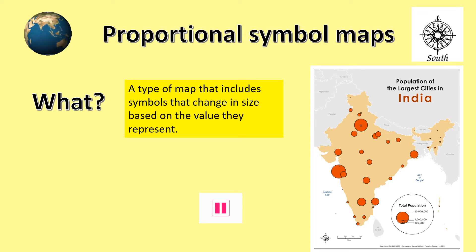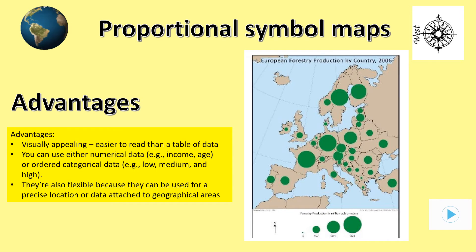An examiner may ask about the advantages of using this type of map. It is often easier to identify the patterns rather than looking at a table full of numbers. It's also a good way of showing data related to places. This method can also help us see, for instance, that there's very little forestry production in the UK compared with France and Germany when looking at the map and the size of the shapes. Pause the show and make sure you understand the advantages of using proportional symbol maps.